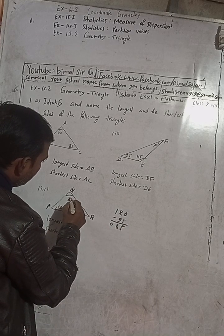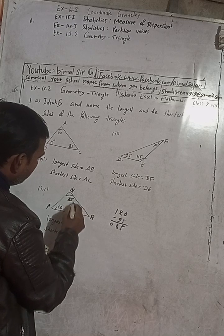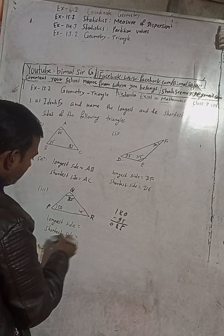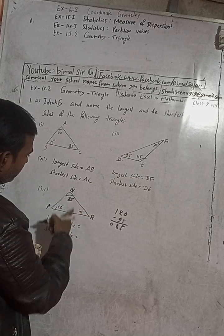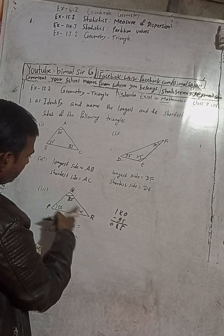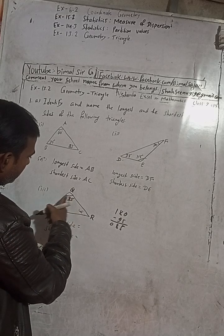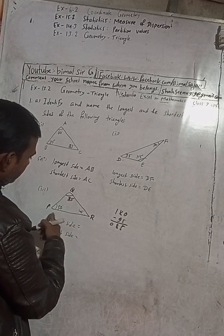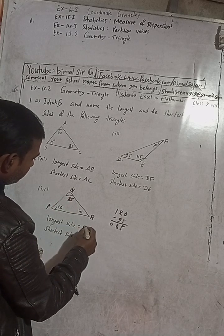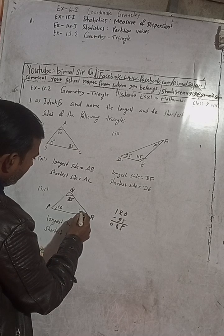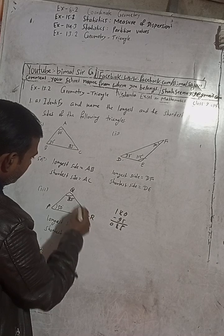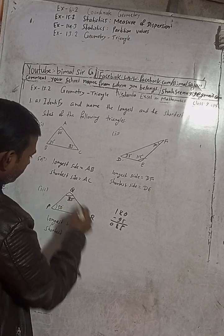Now we can easily find the answers. The greatest angle is 85 degrees, so the longest side is PR, which is opposite to it. The smallest angle is 45 degrees, so the shortest side is PQ, which is opposite to that angle.